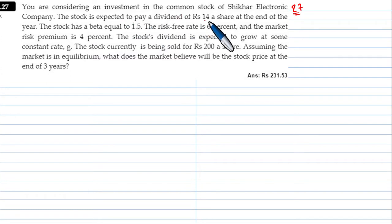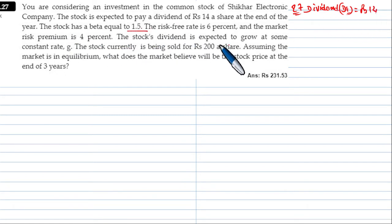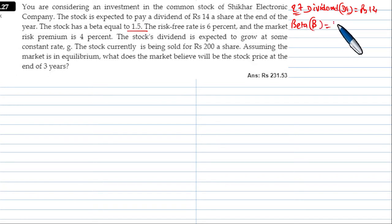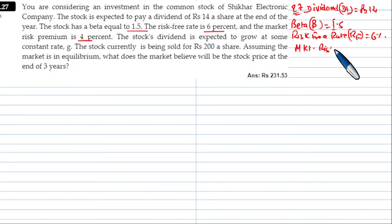The stock is expected to pay a dividend of Rs. 14 a share at the end of the year, so D1 is equal to Rs. 14. The stock has a beta equal to 1.5. Using the CAPM model, beta is equal to 1.5, the risk-free rate RF is 6%, and the market risk premium is 4%.